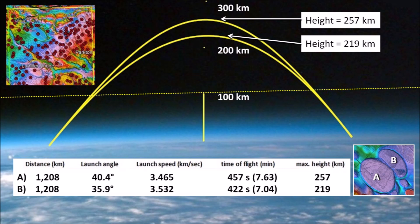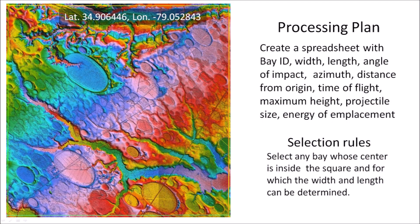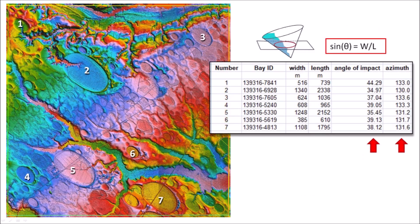Doing something similar for all the bays in an area of 100 km² is a long and tedious process where the only reward is the final image. The main objective is to create a spreadsheet to record the information for each bay processed, including the bay ID, width, length, angle of impact, azimuth, distance from the origin, time of flight, maximum height, projectile size, and energy of emplacement. A convergence point adjusted for the Coriolis effect will be determined with the aid of the orientation of the Nebraska Rainwater Basins. Only bays whose center is inside the 100 km² area and for which the width and length can be determined are selected. To test the idea, I selected seven well-preserved Carolina Bays in this area.